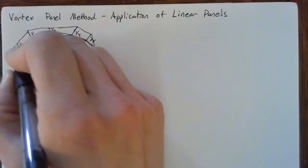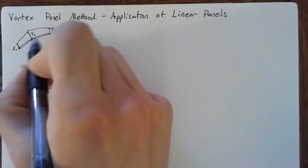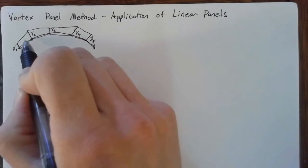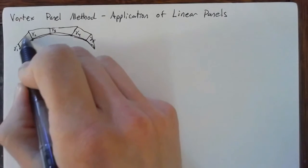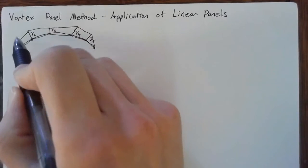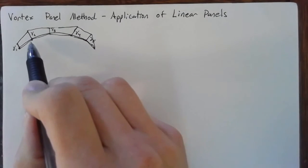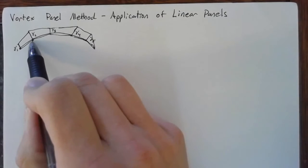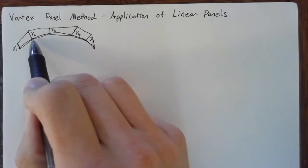And the reason for that is we can assume that the linear distribution is constant across a panel, meaning that there's continuity of the panel strength. So we're saying that the gamma at the right end of panel 1 is going to be equal to the gamma at the left end of panel 2.